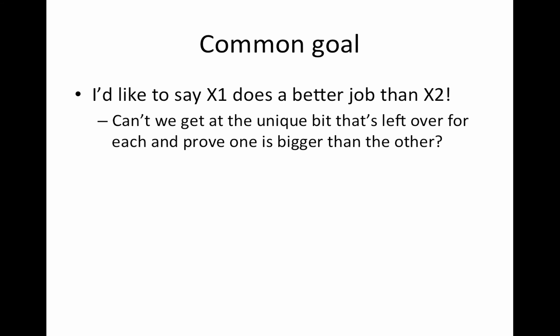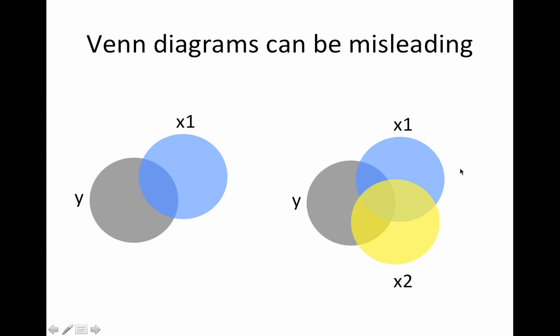The common goal that I hear frequently, and with reason, I can totally understand where this comes from, is you'd like to say X1 does a better job than X2 in your model. We want to get at these unique bits, like this little bit here, we want to say this is smaller than this, so X2 wins. But the story is actually a lot more complicated.